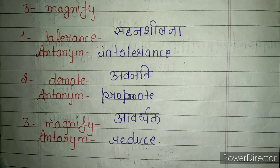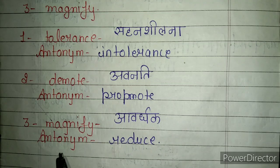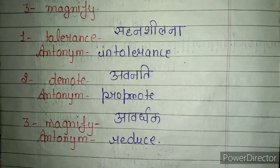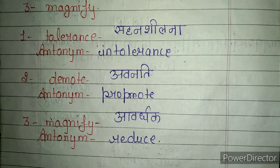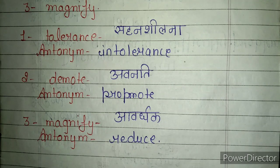Second word is demote. Demote का हिंदी में मतलब होता है अवनति। इसके लिए antonym यूज़ कर सकते हैं promote — P-R-O-M-O-T-E. Third word is magnify. Magnify का मतलब होता है आवर्धक, यानी बढ़ाने वाला। इसके लिए antonym यूज़ कर सकते हैं reduce, जिसका मतलब हुआ कम करना।